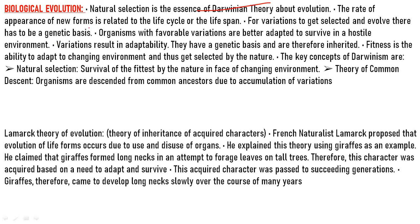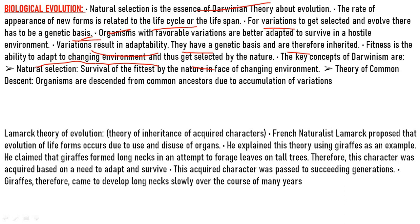The rate of appearance of new forms is related to the life cycle or lifespan. For variations to get selected and evolve there must be a genetic basis. Organisms with favorable variations are better adapted in nature. Variations result in adaptability — this is known as adaptive radiation — and they have a genetic basis, therefore must be inherited. Fitness is the ability to adapt to the changing environment and get selected by nature. Branching descent and natural selection are the two key concepts of Darwinian theory.